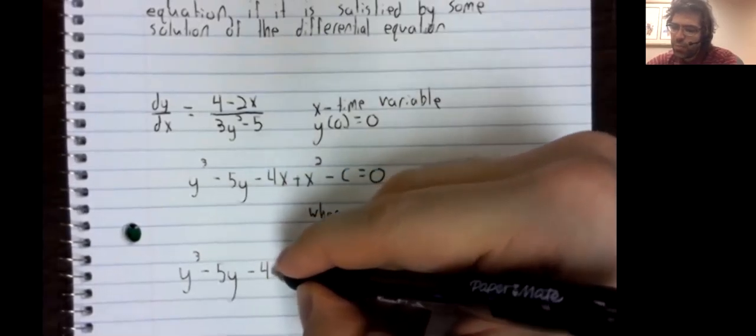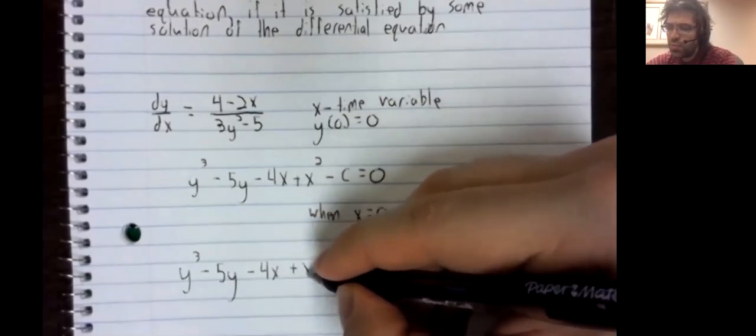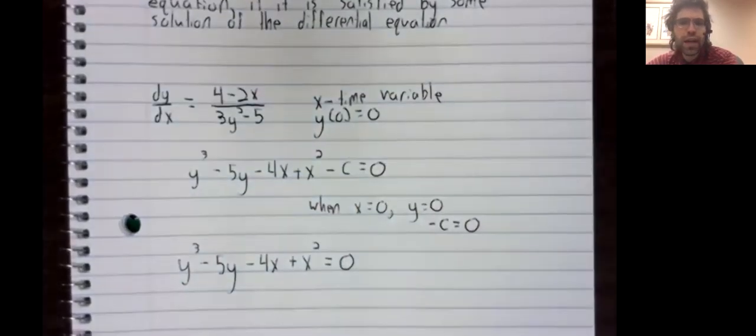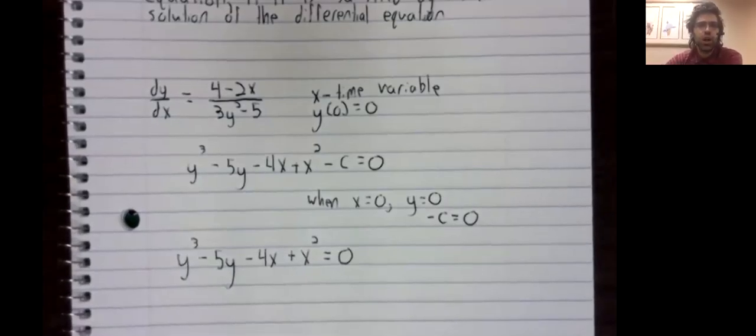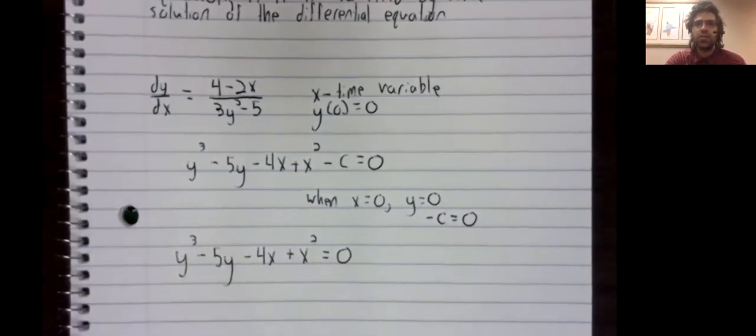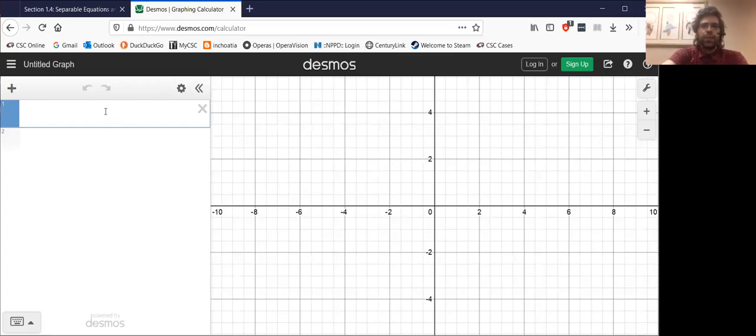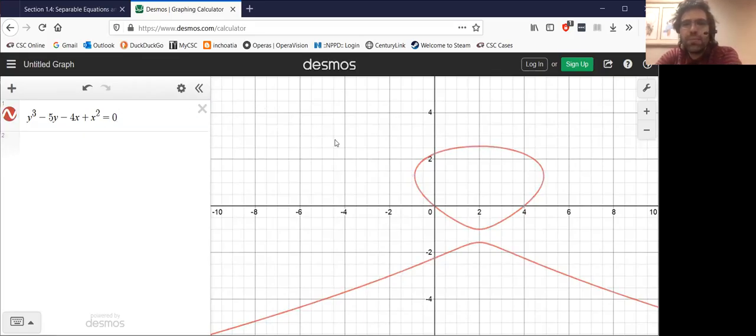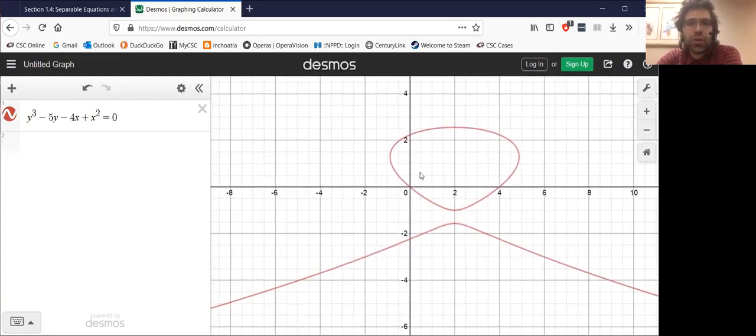And going back to my first statement about how, thanks to the rise of swift and powerful graphing technology, it's not really bad to have a solution like that. Here we are in desmos.com and we will plug y³ - 5y - 4x + x² = 0 in, and we will more or less instantly get a picture back.